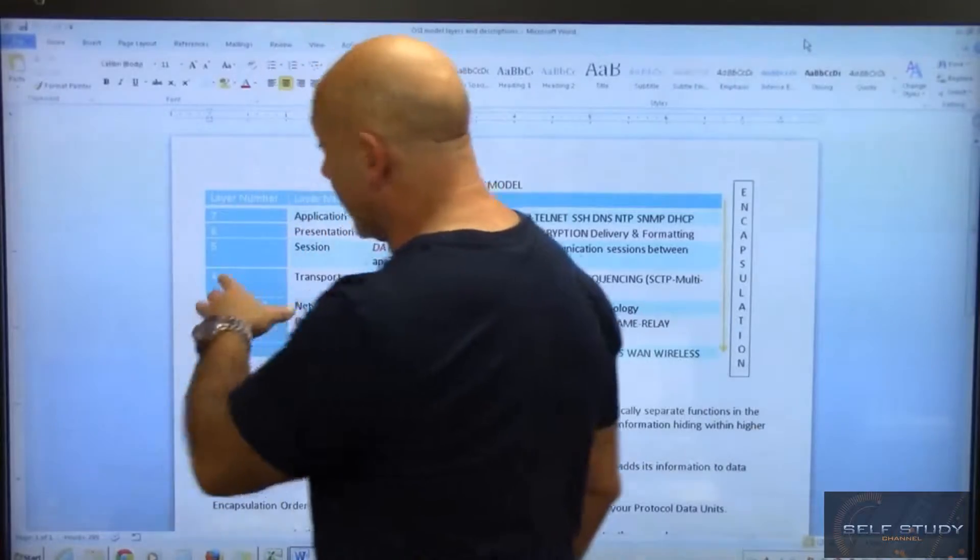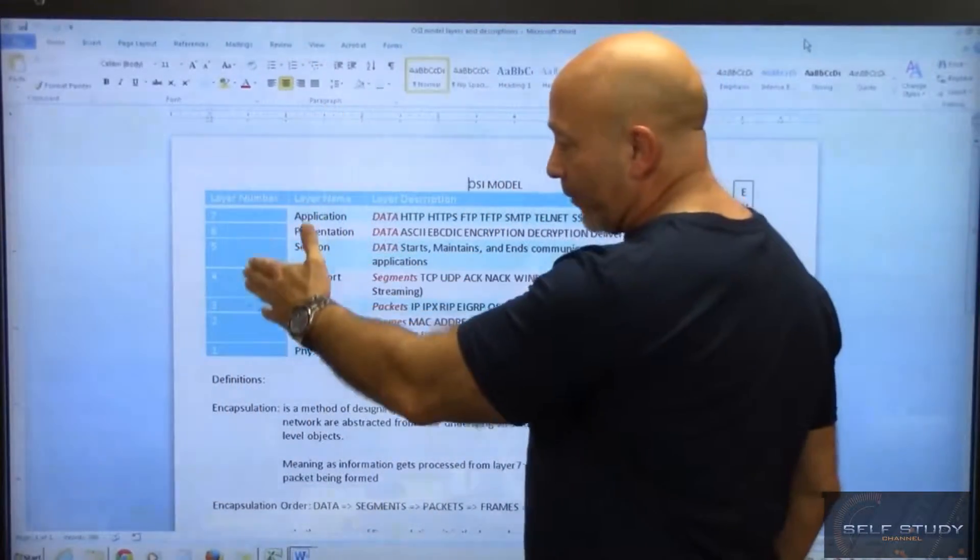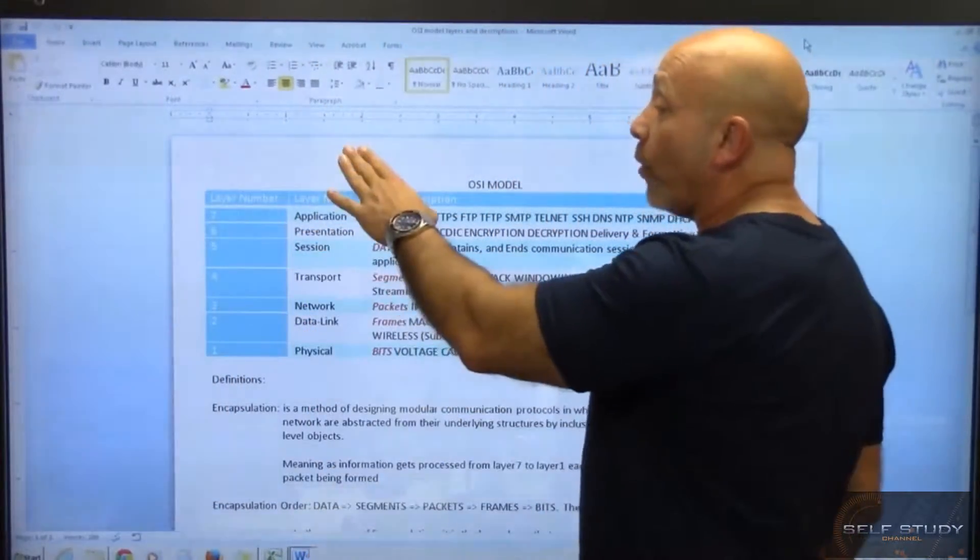We need to know that there are seven layers from seven, six, five, four, three, two, one. We need to know the layer name.